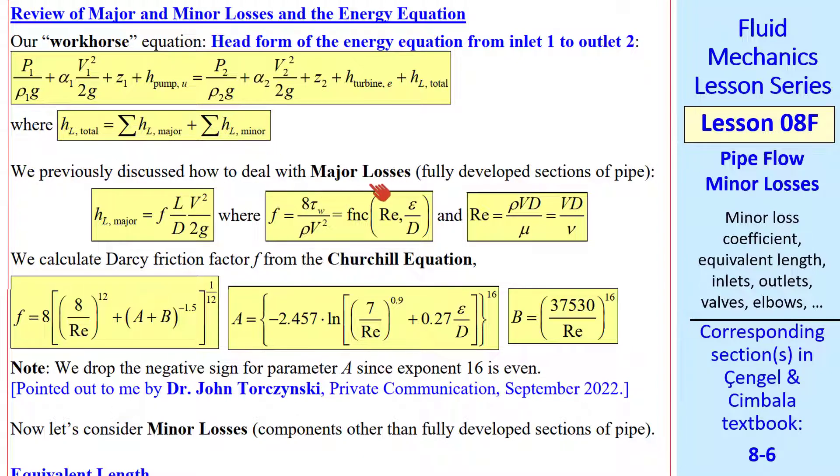We know how to deal with major losses using this equation, where f is a function of Reynolds number and relative roughness, and we get f from the Churchill equation.